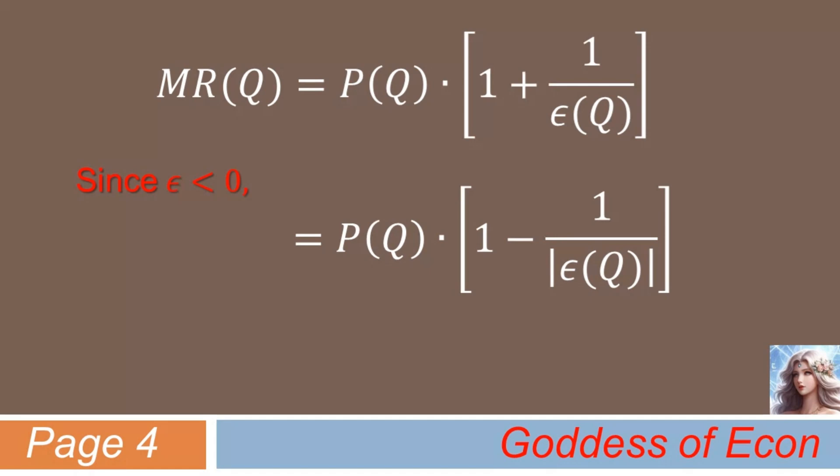Here, some may wonder why epsilon is written not as a function of P, but rather as a function of Q. Well, it's reasonable to think so, but remember, we have all along assumed that P is a function of Q, not the other way around. So, if P is assumed to be a function of Q, a function of P is actually a function of Q. Confusing, isn't it? Blame the darn economists for making this world unnecessarily confusing. Shall I go ahead and condemn your professors on your behalf?